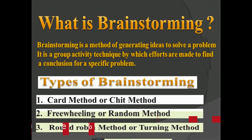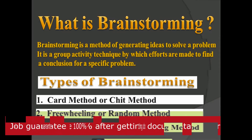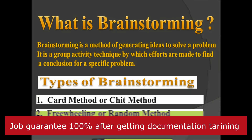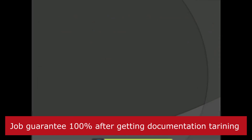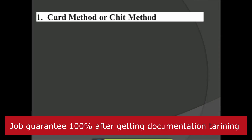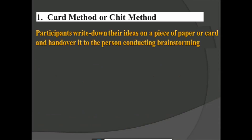Now let's explain the three types of brainstorming one by one. The first one is the card method or cheat method. In this method, participants write down their ideas on a piece of paper or card and hand it over to the person conducting the brainstorming.